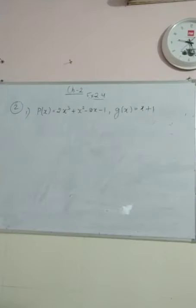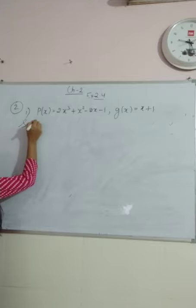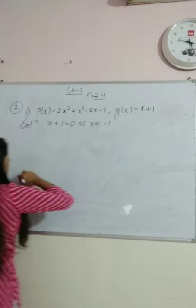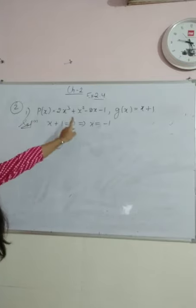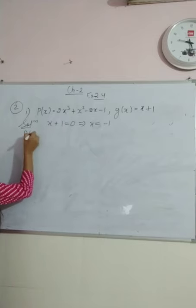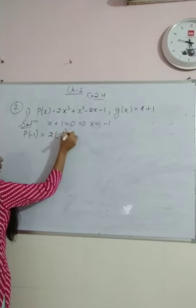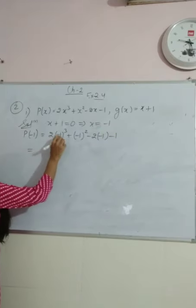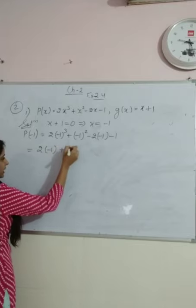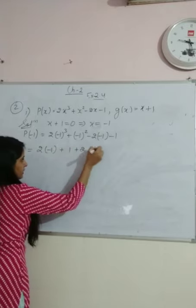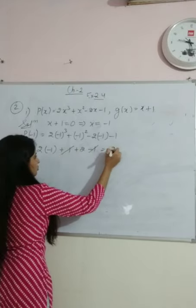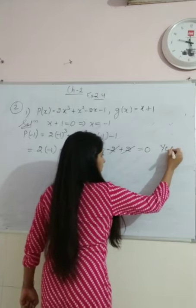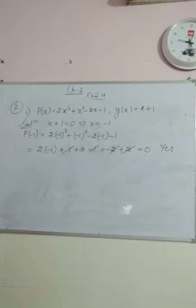तो same to same चीज, इसको equal to 0 put करूँगी: x+1=0, x=-1. P(-1) = 2(-1)³ + (-1)² - 2(-1) - 1. (-1)³ = -1, so 2×(-1) = -2. Plus (-1)² = +1. Minus 2×(-1) = +2. Minus 1. So: -2 + 1 + 2 - 1 = 0. So x+1 is a factor of 2x³+x²-2x-1.